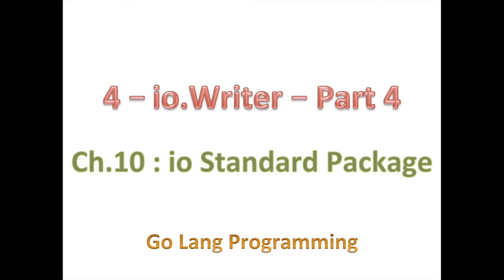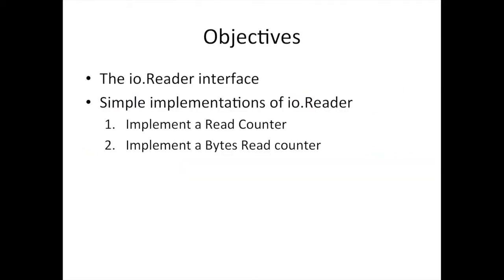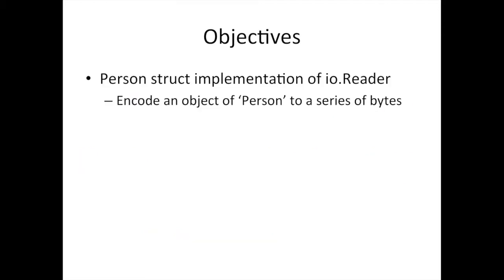So instead of going to chapter 11, section 1 with IO Reader, it's going to be chapter 10, section 5, IO Reader part 1. And then IO Reader part 2 is section 6, chapter 10. And now we are in chapter 10, section 7.